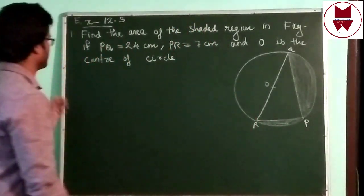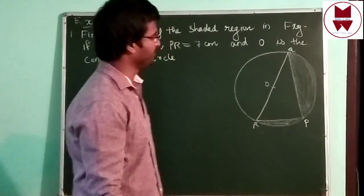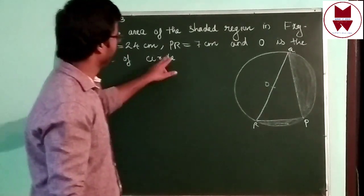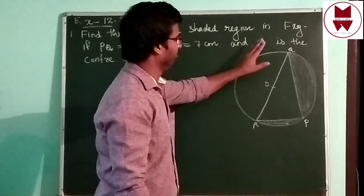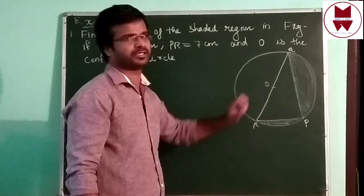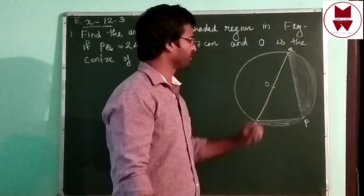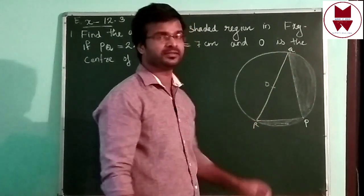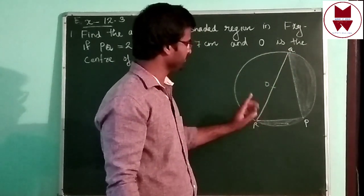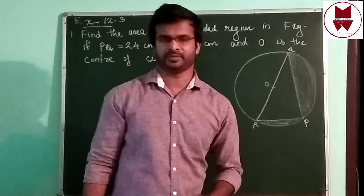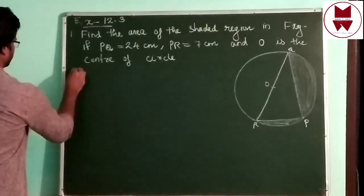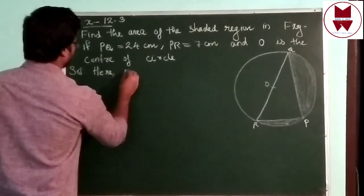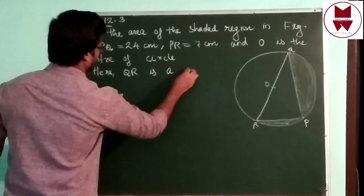Now we can see Question No. 1: Find the area of the shaded region in the figure. If PQ is equal to 24 cm, PR is equal to 7 cm, and O is the center of the circle. Since O is the center, QR — the straight line passing through the center — is the diameter. So QR is a diameter.